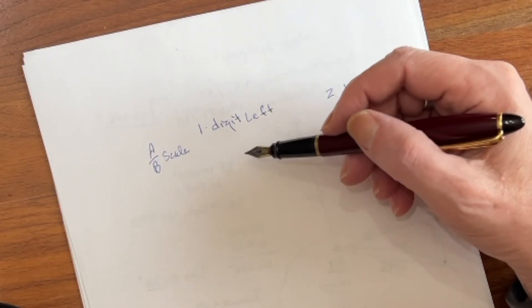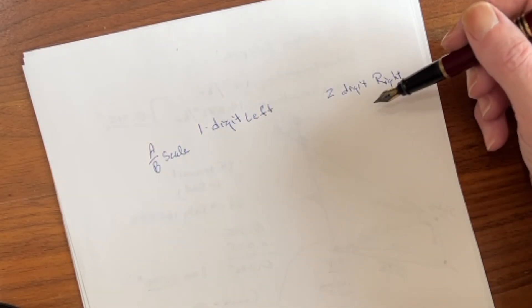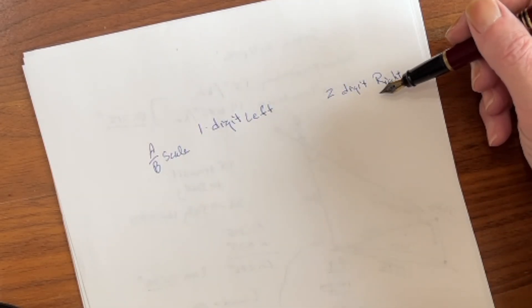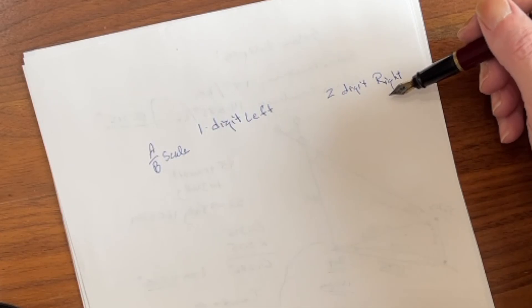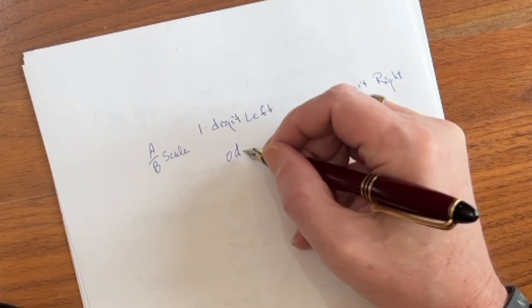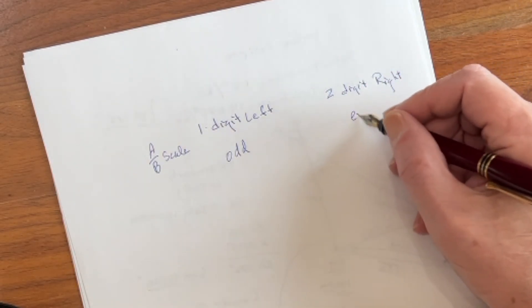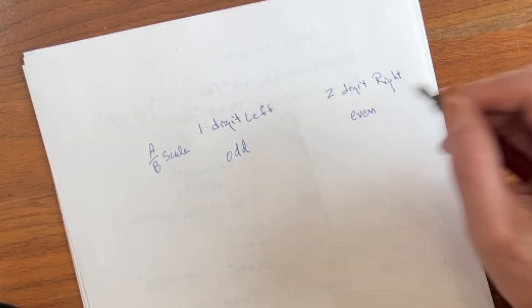So here's the rule. If we have one digit to the left of the decimal place, we're going to use the left side. If we have two digits to the left of the decimal place, we're going to use the right side. We can actually even expand this a little bit. If we have an odd number of digits, we're going to use the left. And if we have an even number, we're going to use the right.